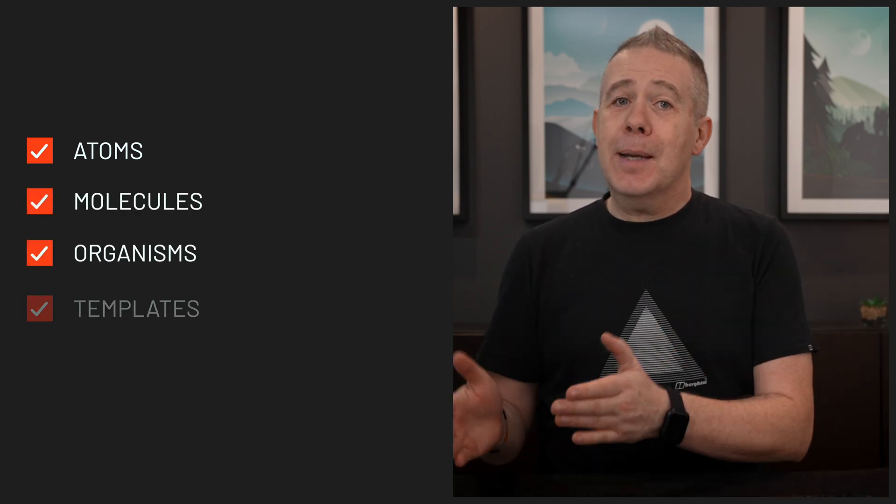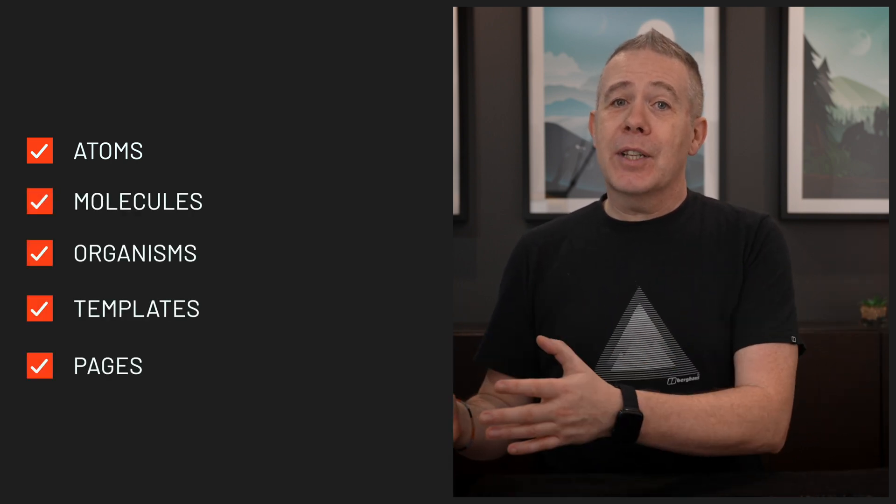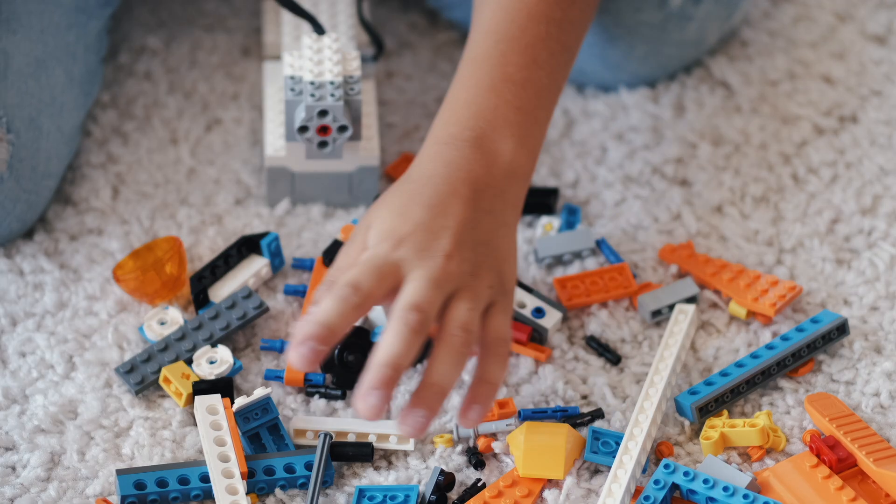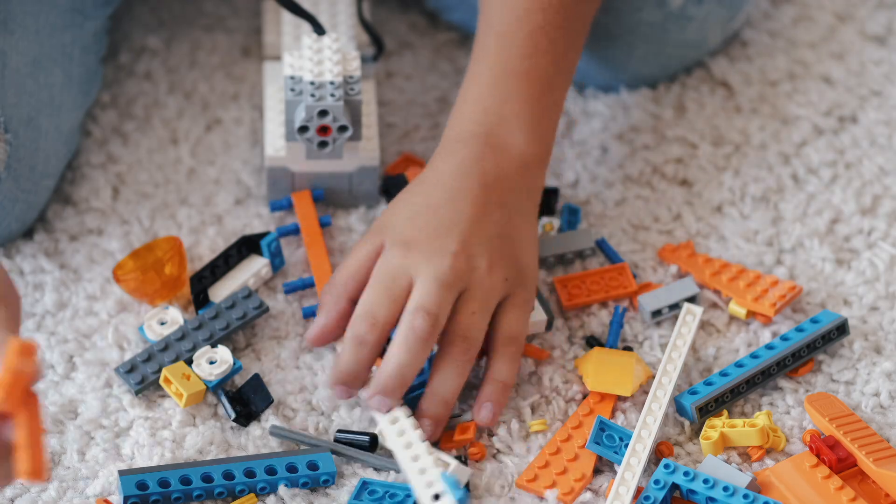So what exactly is Atomic Design? Atomic Design breaks down web design into smaller reusable components called atoms, which are then combined to form molecules, organisms, templates and pages. It's like building with Lego. By using Atomic Design we create a design system that is consistent, efficient and easy to use.